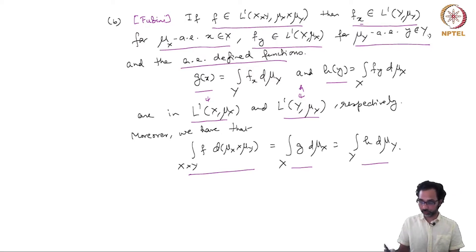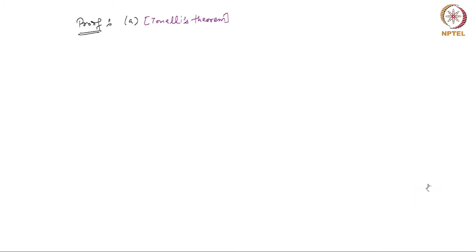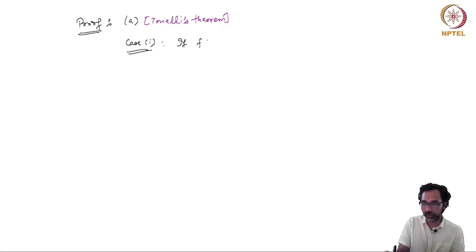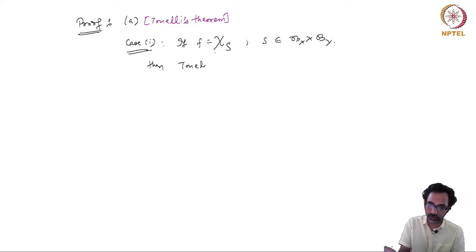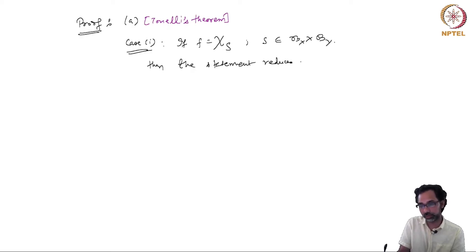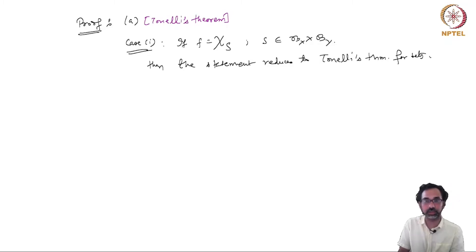Now let us see the proof of Tonelli's theorem, which will imply the second part, Fubini's theorem. For the proof of Tonelli's theorem, we divide it into a few cases. The first case is Tonelli's theorem for sets, where f is the indicator function of a set S belonging to B_X cross B_Y. This reduces to Tonelli's theorem for sets, which we have seen in the last lecture. This takes care of the case when f is the indicator function of a measurable set.